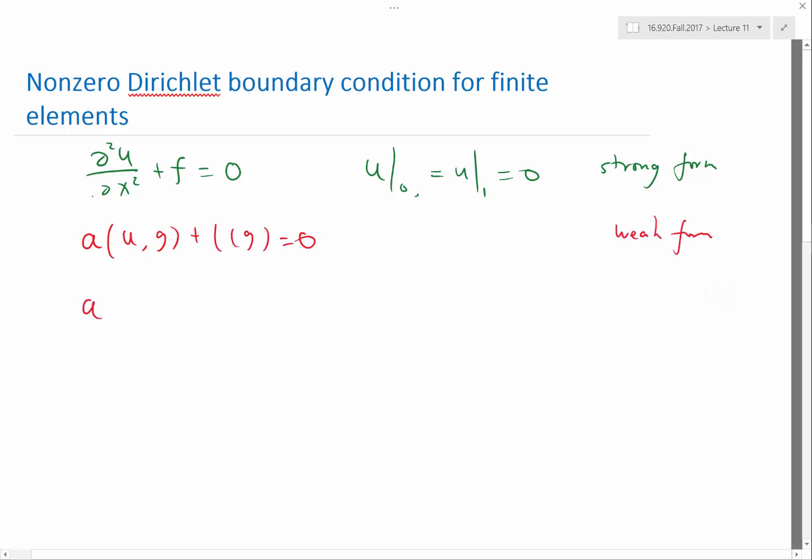My a for the Poisson's equation is equal to minus the integral over zero to one. You can see that the domain which we are solving the equation for is now integrated into the weak form because that defines the bounds of this integral. So du/dx, dg/dx.